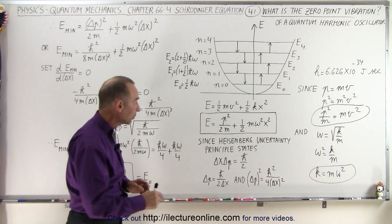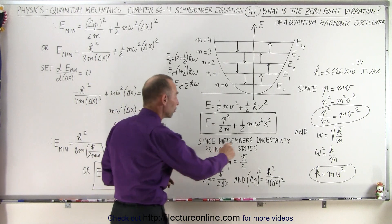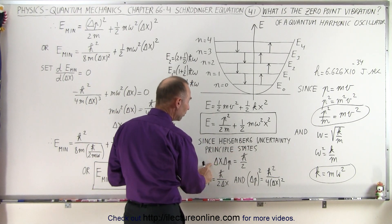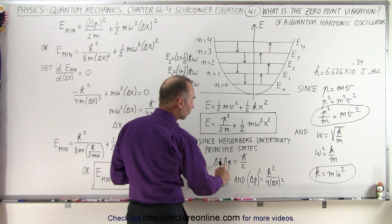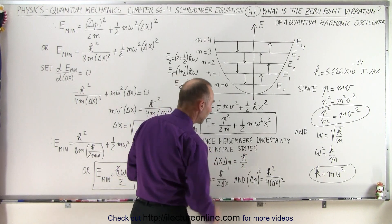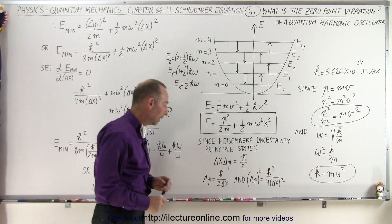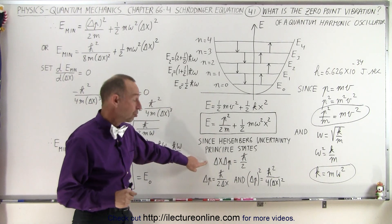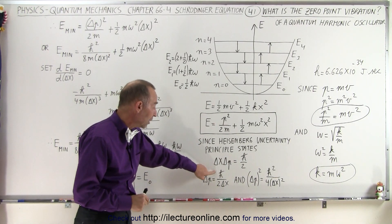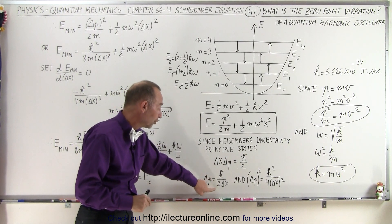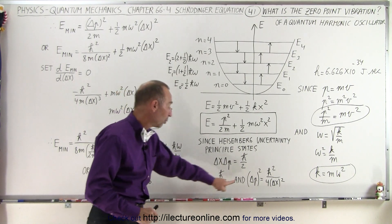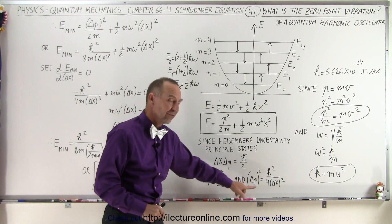Now we go back to the Heisenberg uncertainty principle. It states that the uncertainty in the position times the uncertainty in the momentum is equal to h-bar divided by 2. If we solve this equation for the uncertainty in the momentum, we get h-bar divided by 2 times the uncertainty in the position. Squaring both sides gives us the expression for the uncertainty in momentum squared.